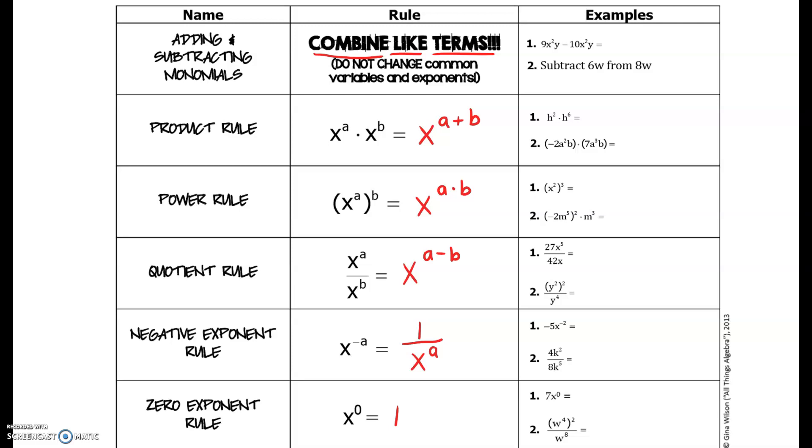So as I go over the examples, if you look at number one, the exponents and variables match, so we just subtract the coefficients. Nine minus ten is negative one, and the variables remain the same. Now in number two, when we are talking in a statement form, be careful of the order for subtraction.